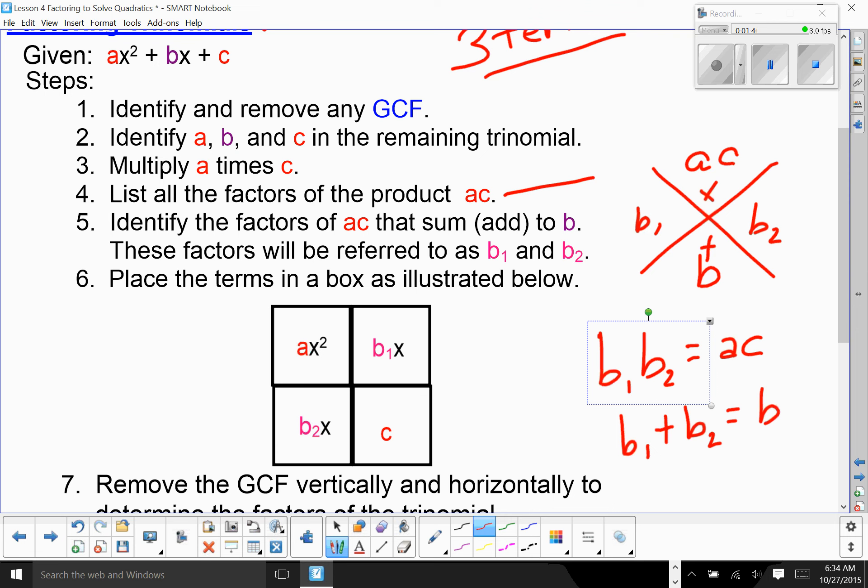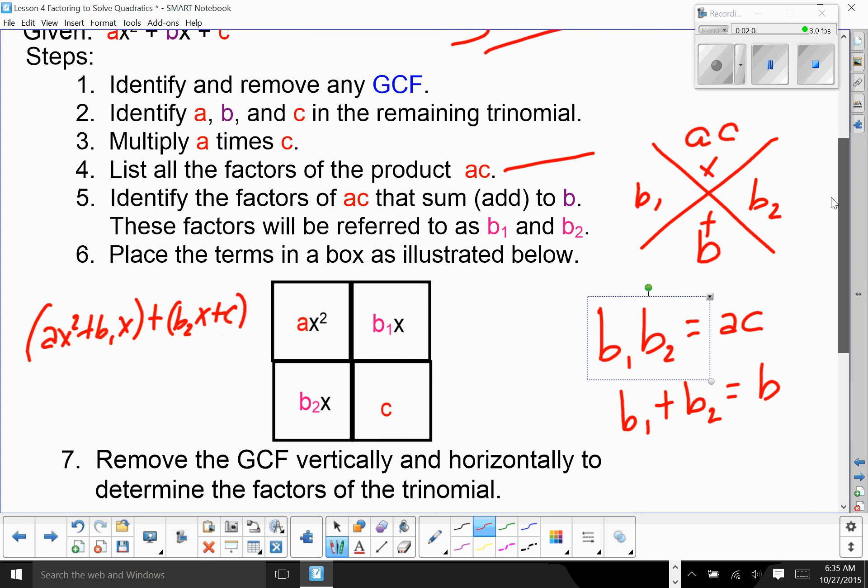B sub 1 times B sub 2 should equal AC. B sub 1 plus B sub 2 equals B. That's what you're looking for. Once you identify these terms, you can put them in the box like this, or you could factor by grouping. AX squared plus B1X plus B2X plus C. Either way.